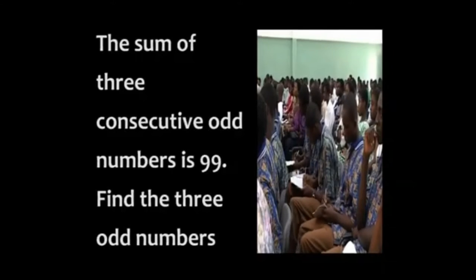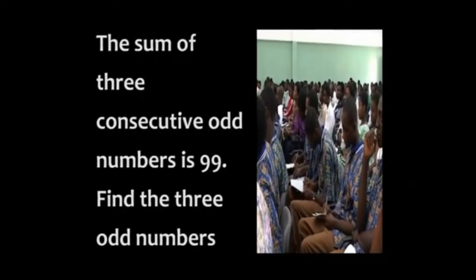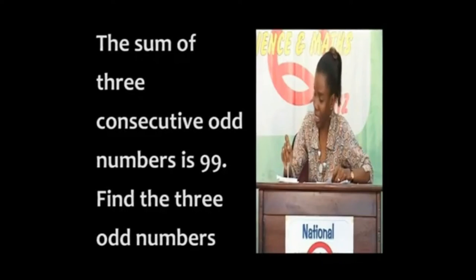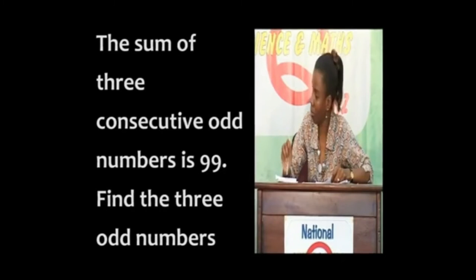Last pair of questions for the round. Keta, the sum of three consecutive odd numbers is 99. Find the three odd numbers. Yes, Victor. 31, 33, and 35. That's right.